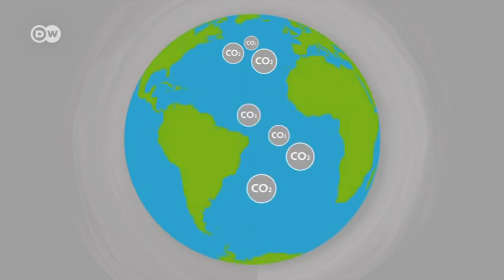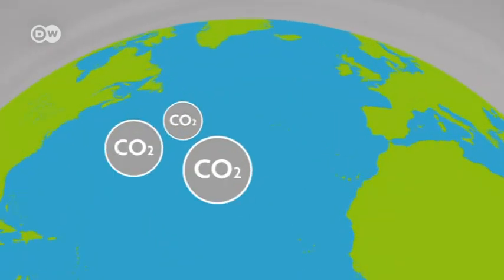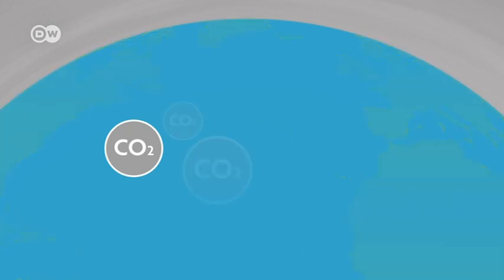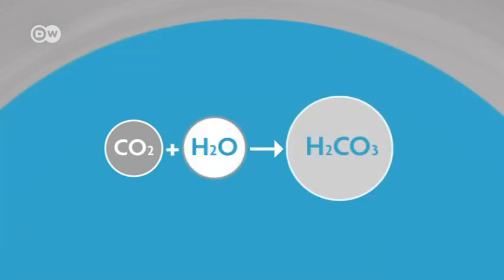But increasing levels of CO2 are altering the water's chemical balance. What's happening? The carbon dioxide dissolves and reacts with the water to produce carbonic acid. This in turn acidifies the sea.